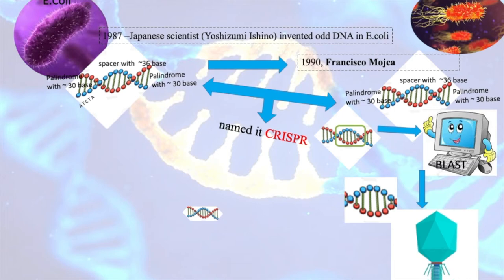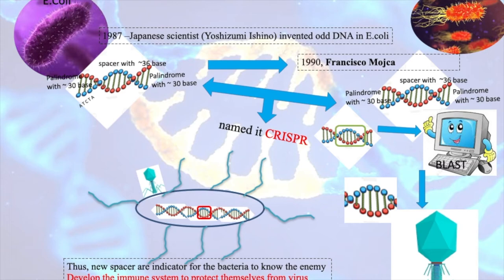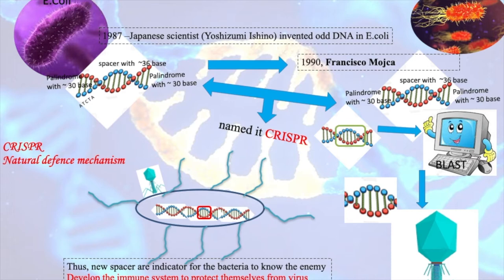With this finding, he hypothesized that this might be the bacterial way of protecting themselves or shielding against viral infection. He assumed that inside the bacteria the CRISPR DNA fights against viral infection and protects the bacteria — acting as an immune system. This hypothesis was later proved true by many other researchers.